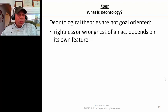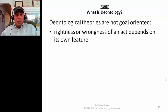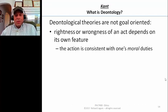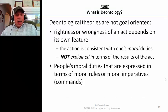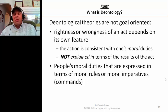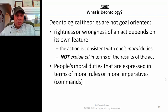In fact, Kant likes that about the theory because he thinks there's a problem with all teleological theories, and we'll get to that when we get to Kant. Rightness and wrongness, according to a deontological theory, depends on features of the act itself, not what it causes. The feature that's really important for Kant is that the action has to be consistent with one's moral duties, one's moral obligation, not explained in terms of what results from the act. People's moral duties are expressed in terms of moral rules or what is sometimes called moral imperatives, and we'll look at this notion of imperative or commandment when we talk to Kant.